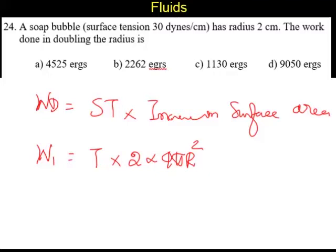Now, this is going to be equal to, T is given as 30. So, 30 times 2 times 4πR².